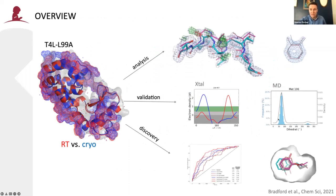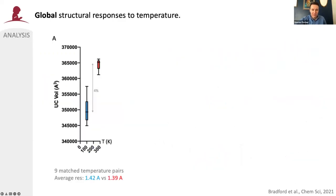To systematically probe the bias of temperature on the utility of structural data for ligand discovery and computational methods development, we focused on three main aspects: first, how does this impact our analysis of electron density maps and the conclusions we draw from those; second, how does this impact our ability to validate computational methods that make predictions based on those structures; and third, how can we leverage this information for the discovery of new chemical matter? I start with the analysis.